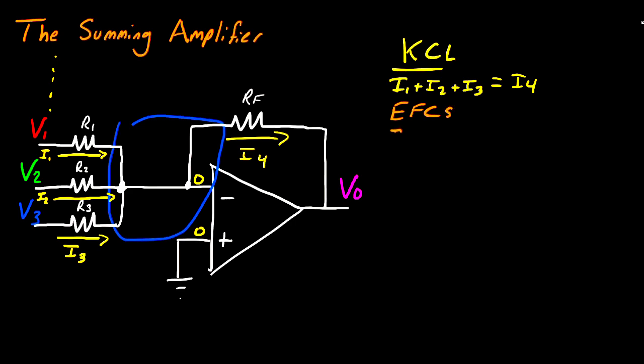And we can start with R1. We'll have I1 is equal to V1 minus zero divided by R1. For R2, we have I2 is equal to V2 minus zero divided by R2. And for R3, we have I3 is equal to V3 minus zero divided by R3.